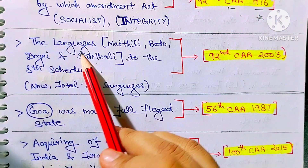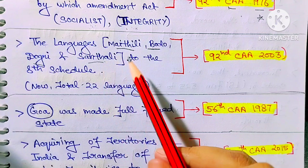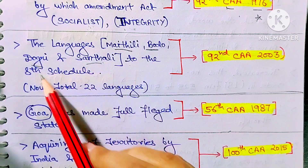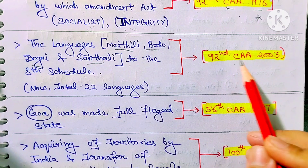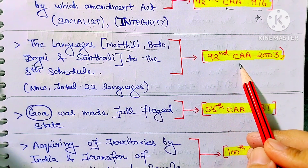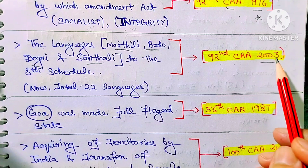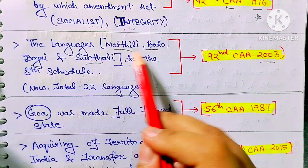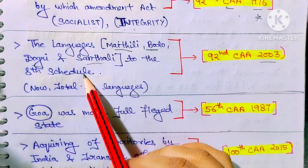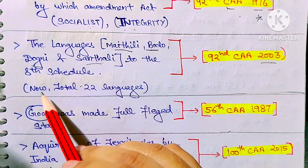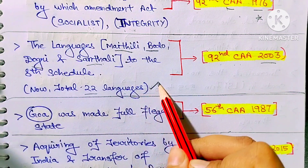Next: the languages Maithili, Bodo, Dogri, and Santali were added to the 8th Schedule through the 92nd Constitution Amendment Act 2003. With this amendment act, these four languages were added to the 8th Schedule. India now has a total of 22 languages in the 8th Schedule.